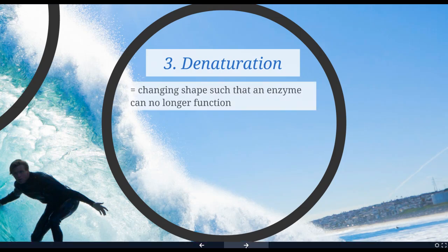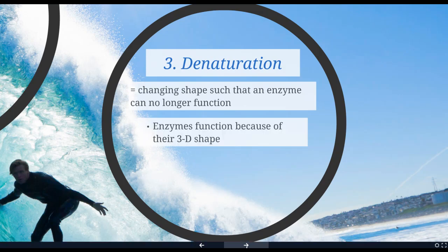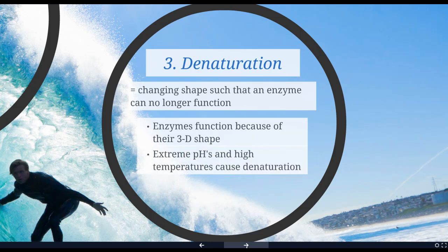Denaturation is when you change the shape of an enzyme so that it will no longer function. An enzyme functions because of its three-dimensional shape, which allows it to hold on to a particular molecule. If you change that shape, it won't be able to hold on to that molecule anymore. Things that cause denaturation include extreme pHs and high temperatures. Exposure to very high temperatures shifts the bonds in amino acids so the enzyme no longer works properly.